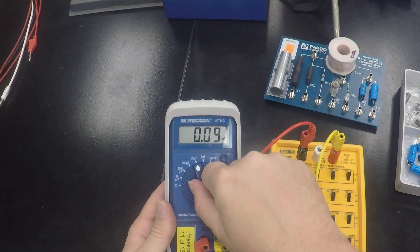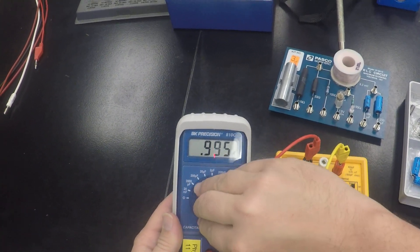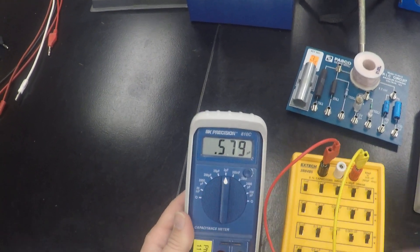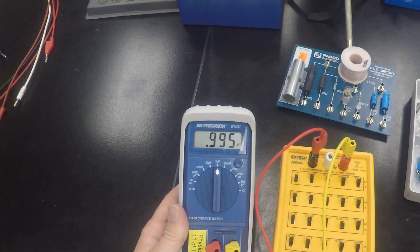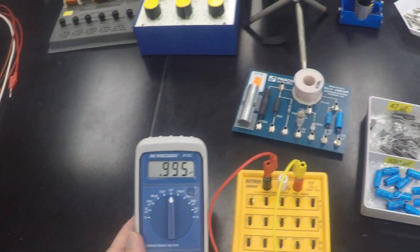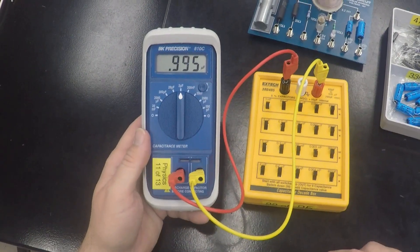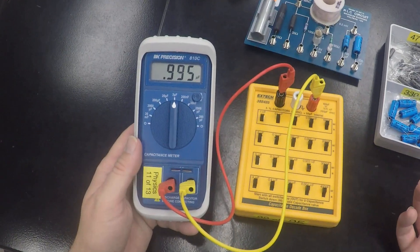And I keep dialing down until I get to my greatest precision. And when I hit a 1, I'm back off. And so I can see that I have a 0.995 microfarad reading, which is pretty close.